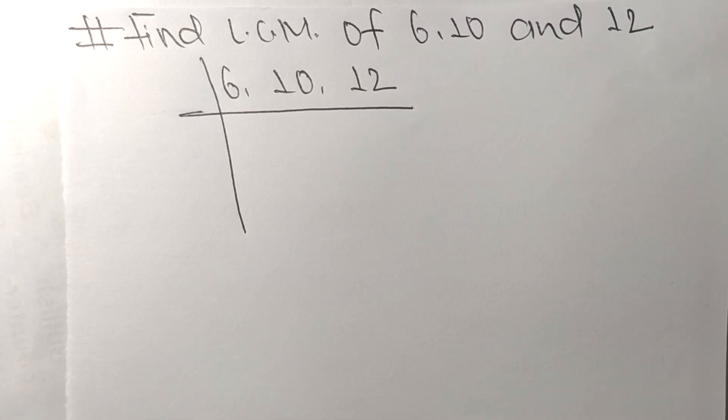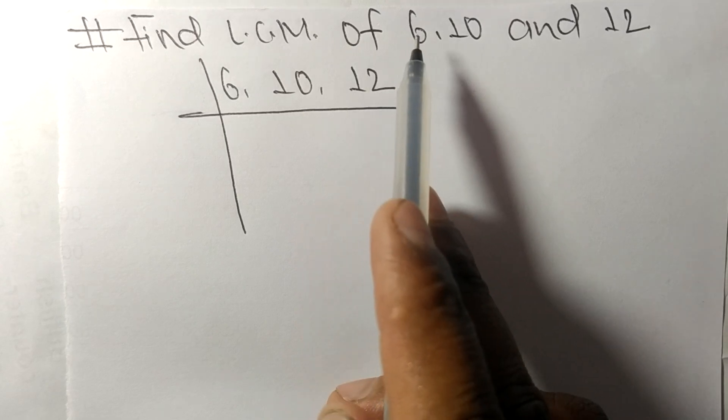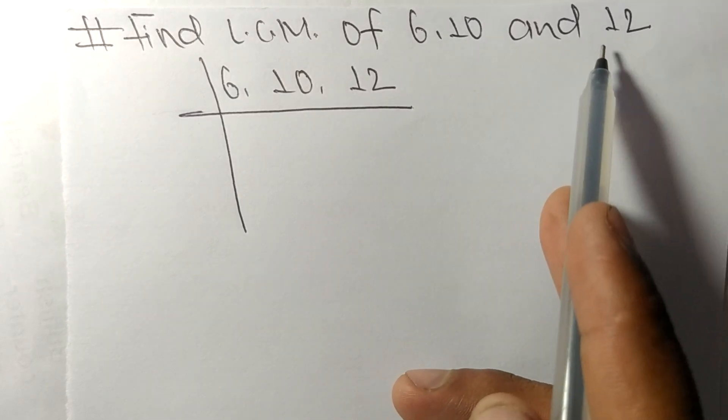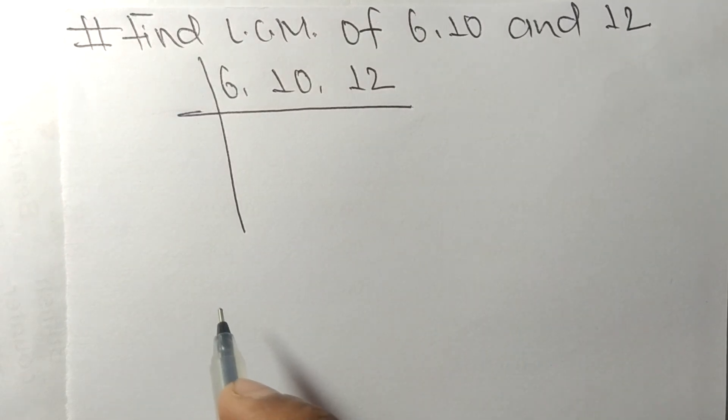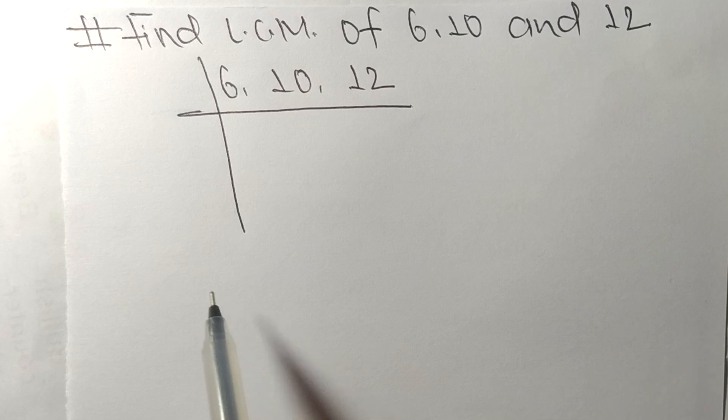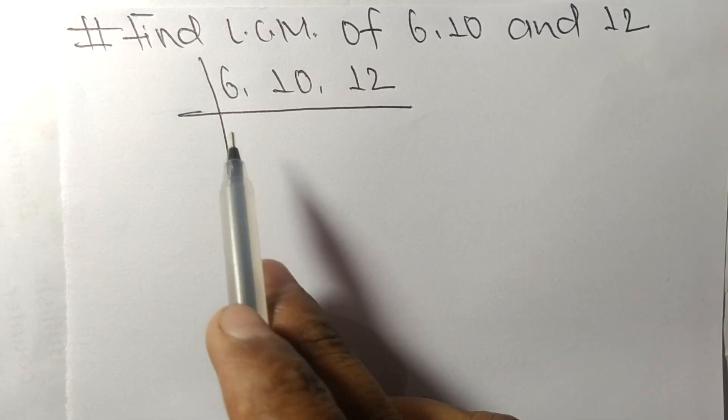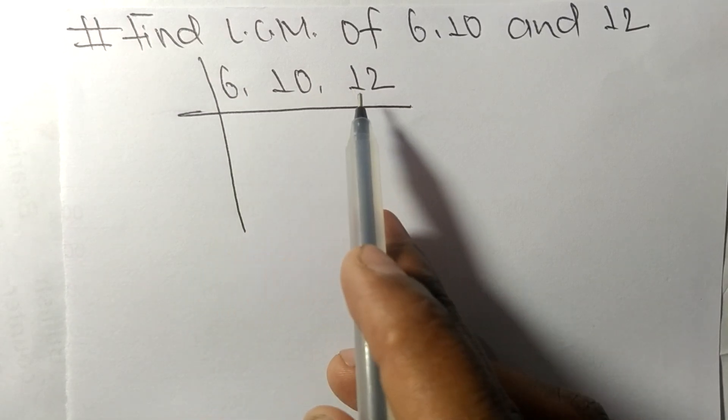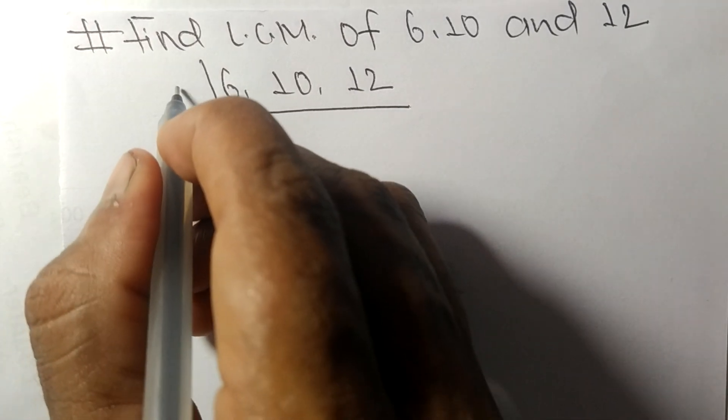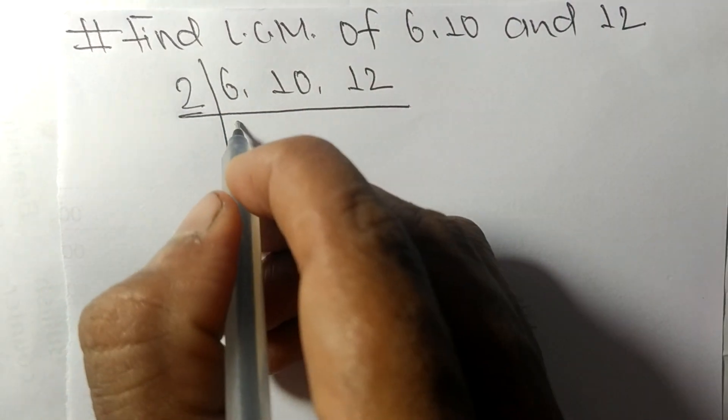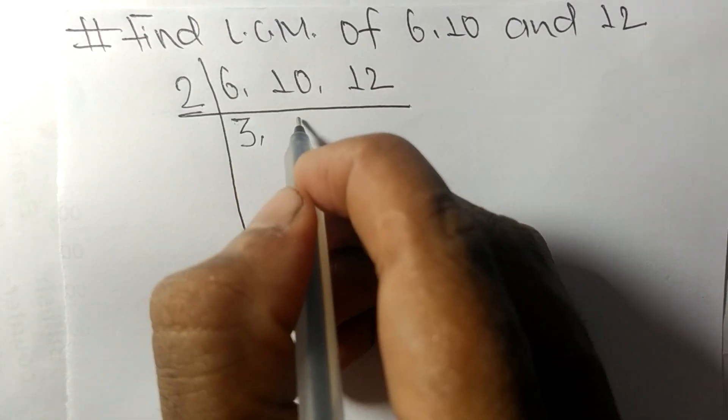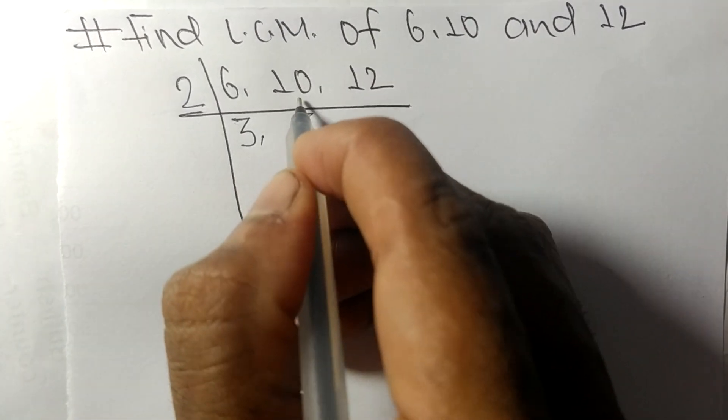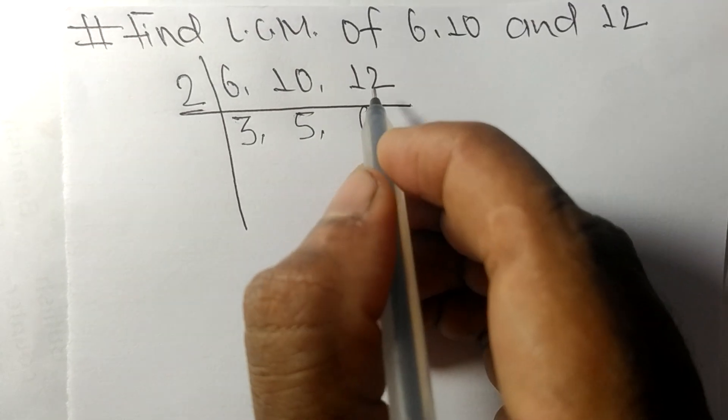Today in this video we shall learn to find the LCM of 6, 10, and 12. To find LCM, we have to choose the lowest number that can exactly divide 6, 10, and 12. These numbers are all divided exactly by 2. 2 times 3 equals 6, 2 times 5 equals 10, and 2 times 6 equals 12.